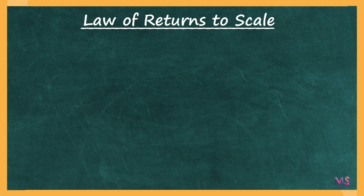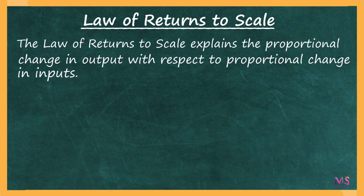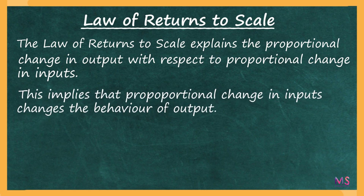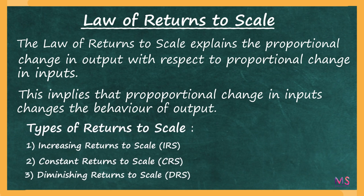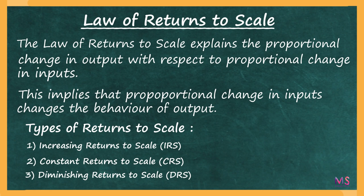The Law of Returns to Scale explains the proportional change in output with respect to proportional change in inputs. That means, depending upon the proportion of inputs employed, the production of output also changes. On the basis of this, the Law of Returns to Scale is categorized under three heads: Increasing Returns to Scale, Constant Returns to Scale, and finally Diminishing or Decreasing Returns to Scale.